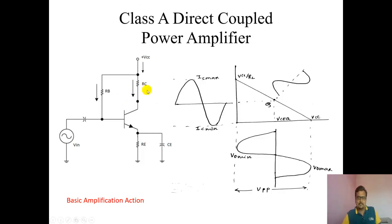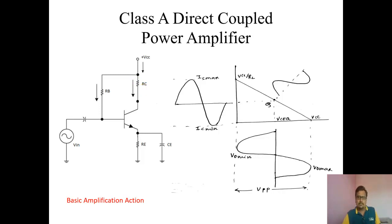I am saying direct coupled because this resistor, which we are referring to as a collector resistor, is now the load, and that load is directly connected to the collector. You can replace this load with a loudspeaker. As it is a power amplifier, the load resistance is very low — you can connect a loudspeaker of 4 ohms or 8 ohms. So RC is the load for me now, and the load is directly connected to the collector.